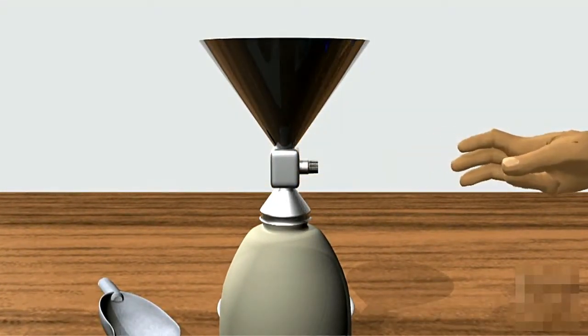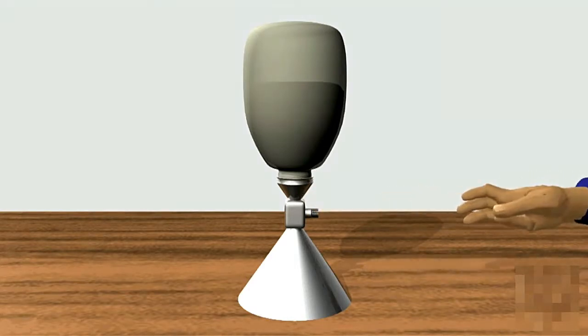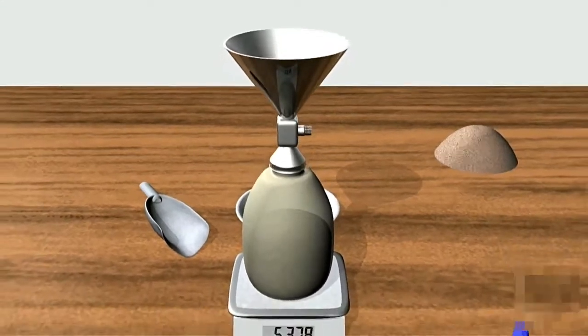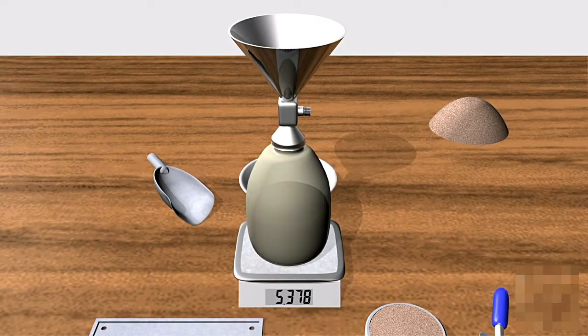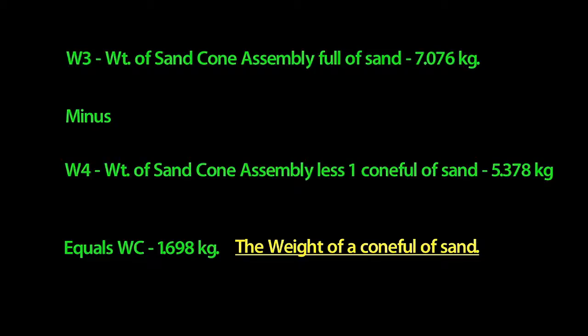We invert the cone, then the valve is opened so that a full cone of sand is released. The valve is to be closed again. Now we weigh the full assembly, we get 5.378 kilograms or refer to this weight as W4. We can now determine the weight of sand required to fill the sand cone by subtracting W4 from W3. We get 1.698 kilograms and we'll call that figure WC.